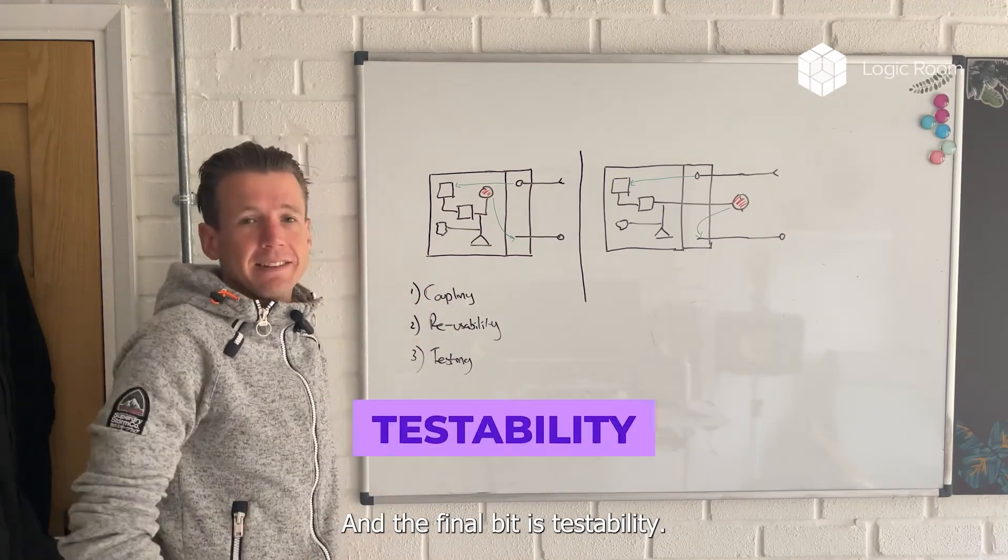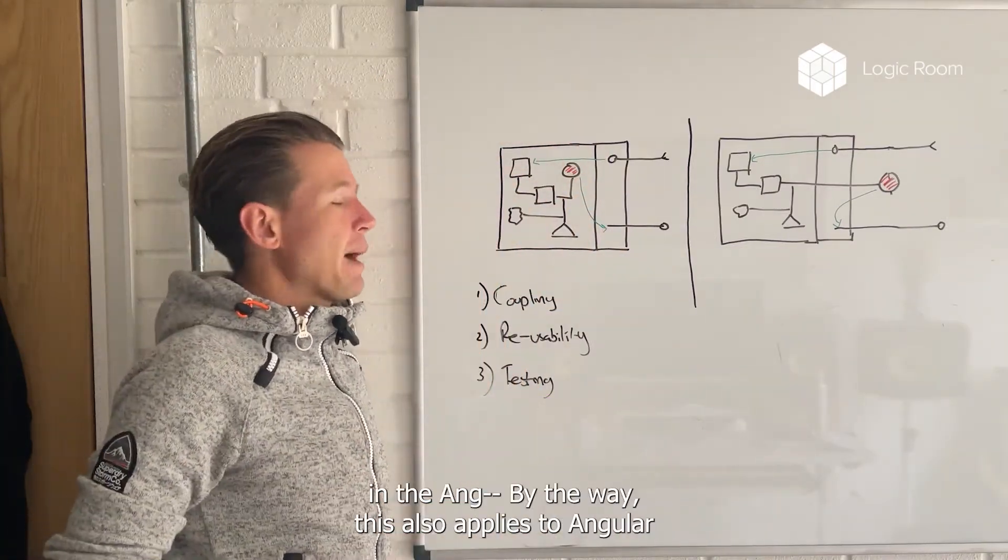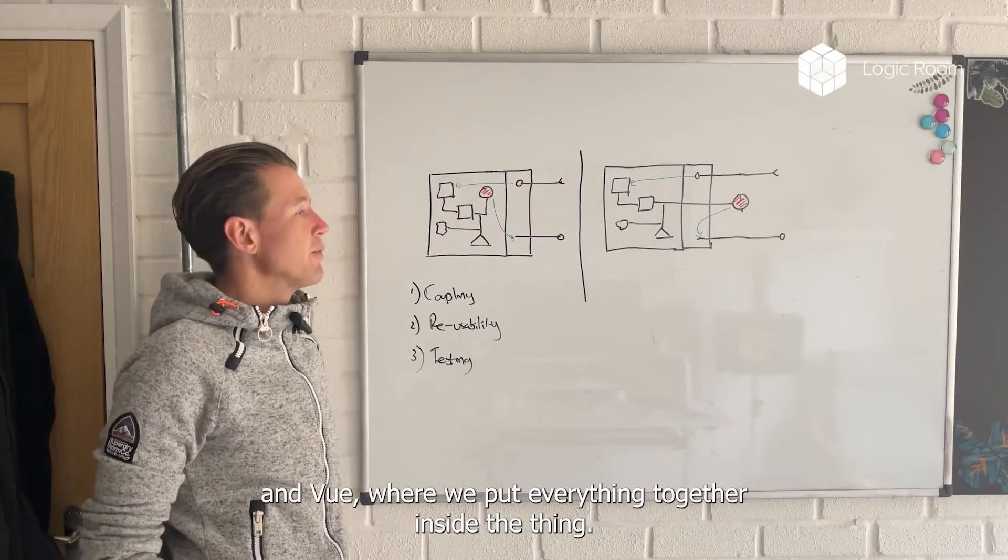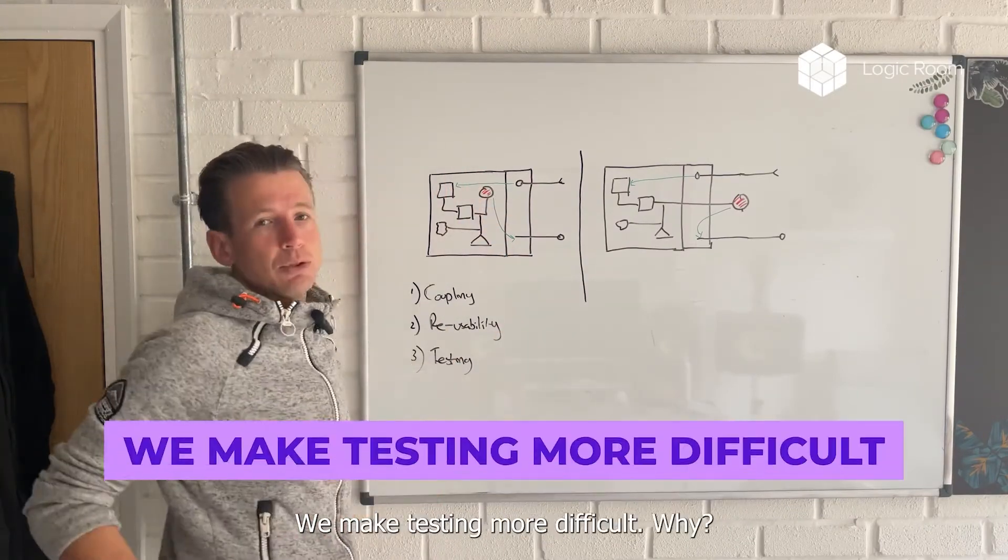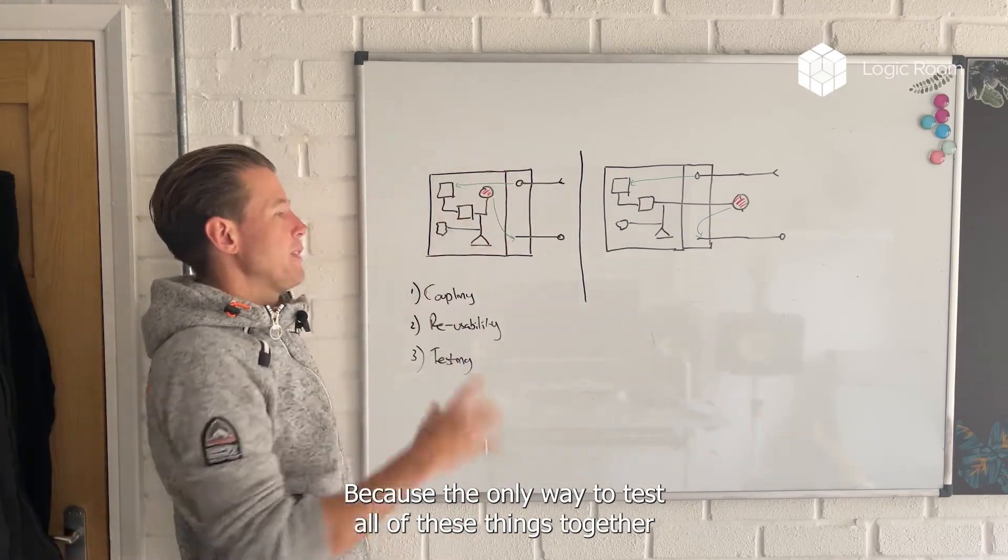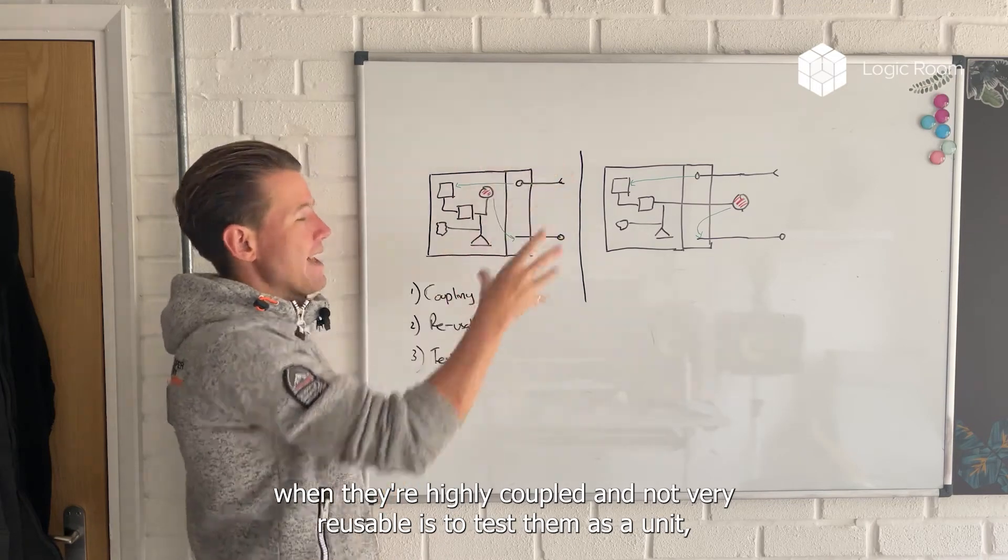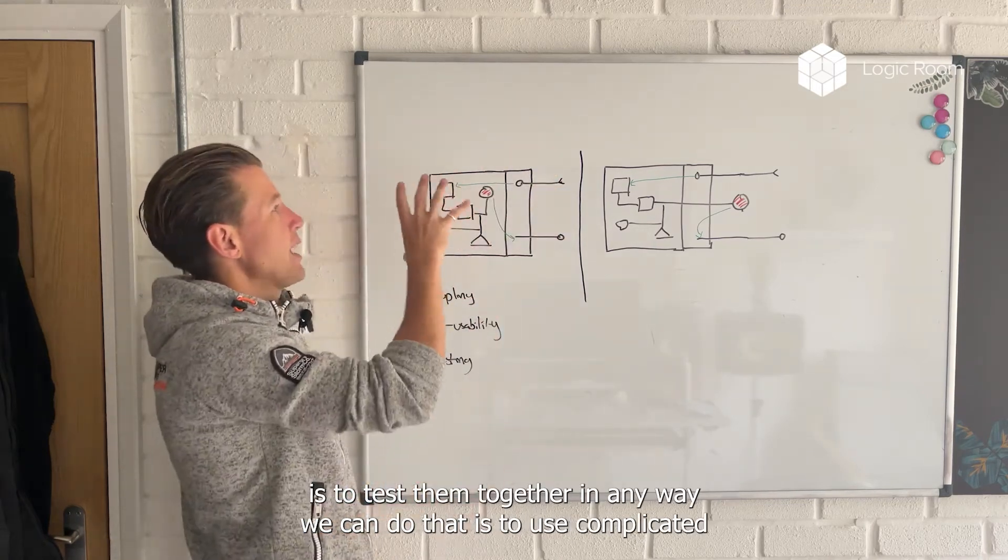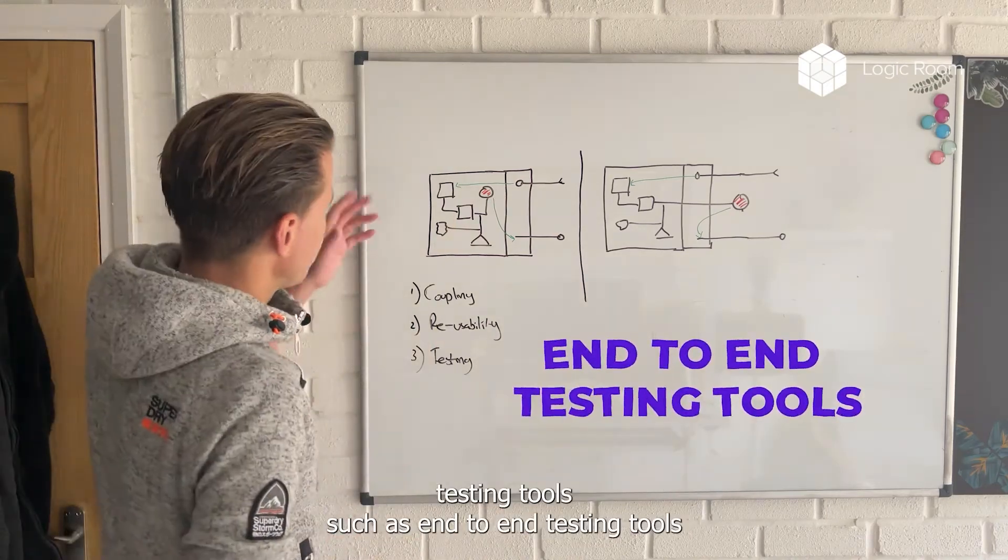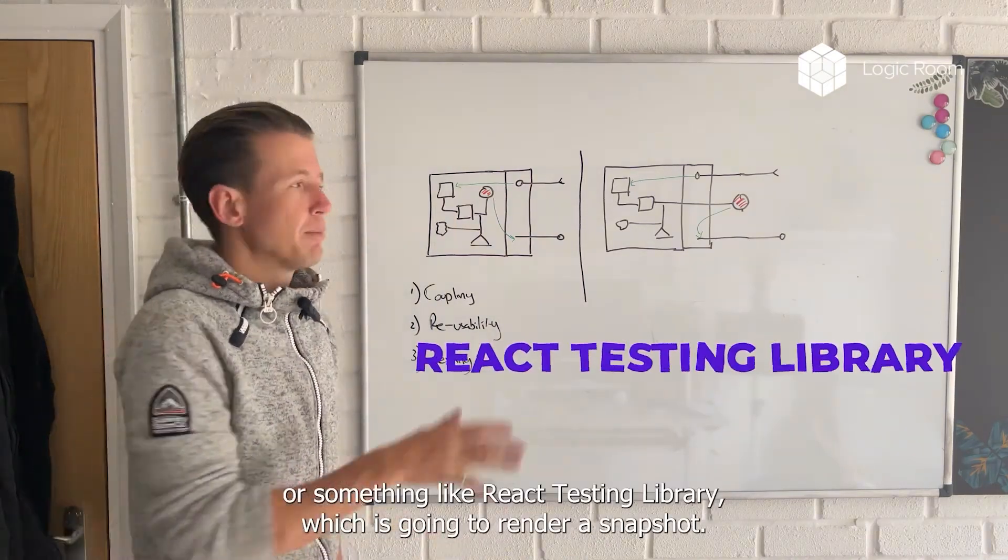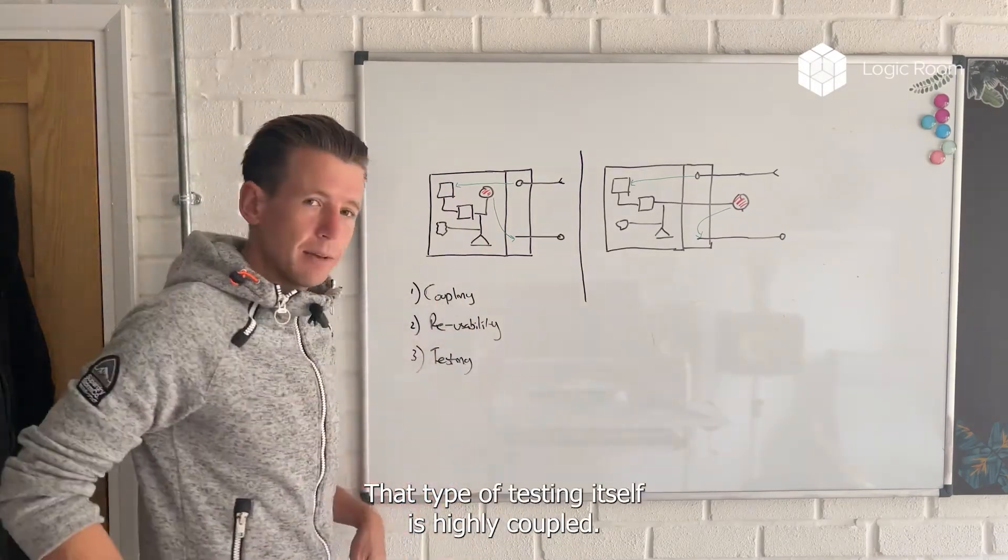And the final bit is testability. When we render components and we put all the components together - and by the way, this also applies to Angular and Vue - when we put everything together inside the thing, we make testing more difficult. Why? Because the only way to test all of these things together when they're highly coupled and not very reusable is to test them as a unit, is to test them together. And the only way we can do that is to use complicated testing tools, such as end-to-end testing tools or something like React testing library, which is going to render a snapshot. And that is highly coupled. That type of testing itself is highly coupled.